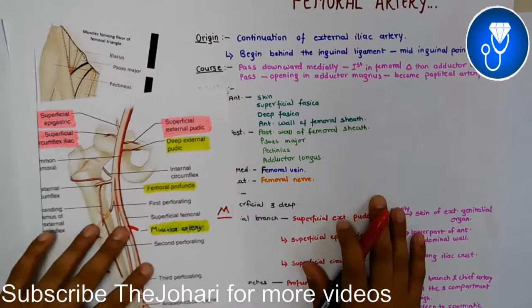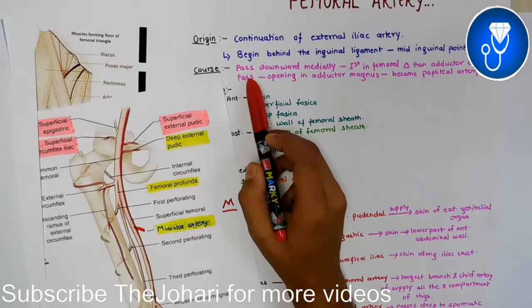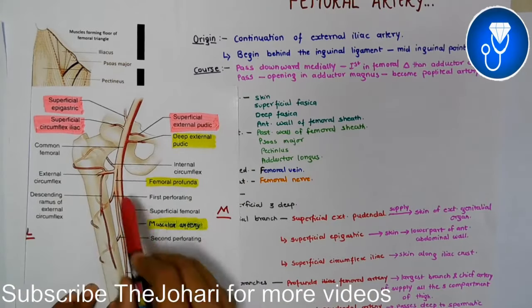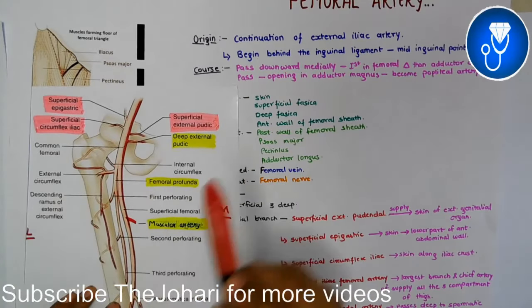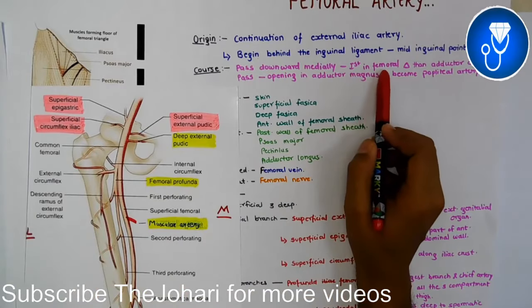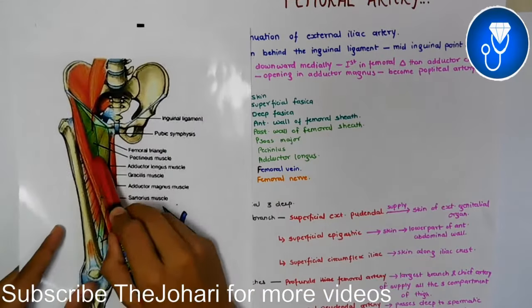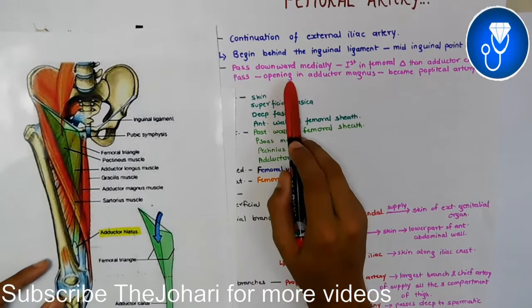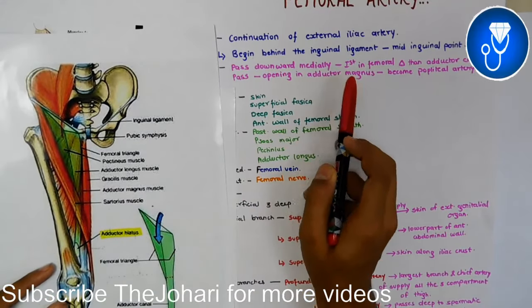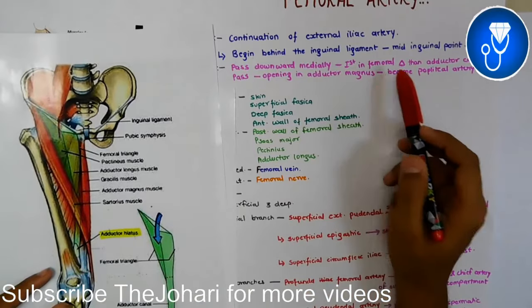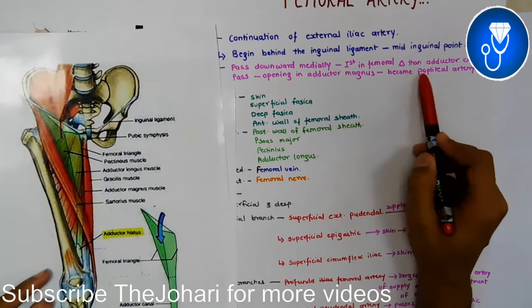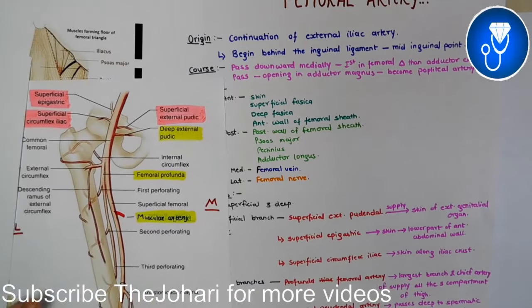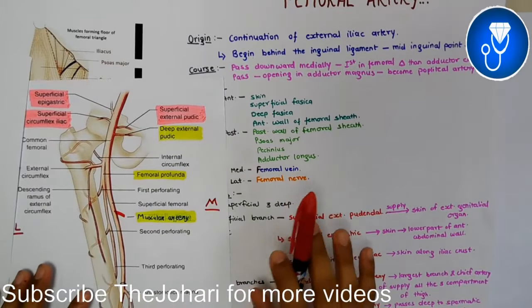So the femoral artery passes anteriorly and descends medially downward through the femoral triangle and adductor canal. It then crosses through the adductor hiatus — the tendon of the adductor magnus — to the posterior side, where it becomes the popliteal artery. So this is the complete course of the femoral artery.